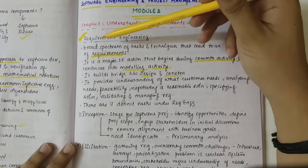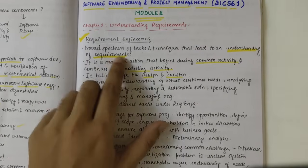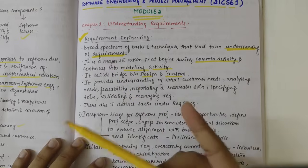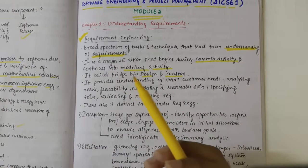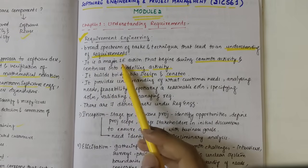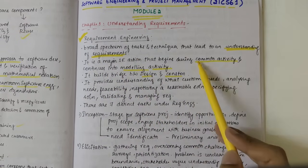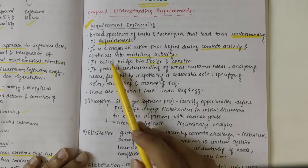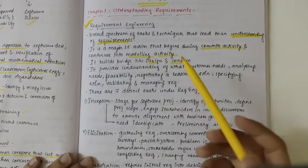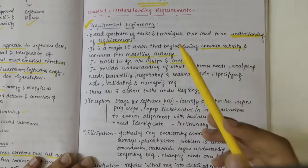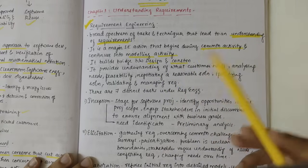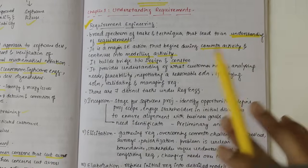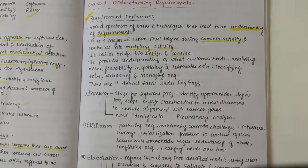Understanding the definition first: Requirement Engineering is a broad spectrum of tasks and techniques that lead to understanding of requirements. We get requirements in the communication activity. It is a major software engineering action that begins during the communication activity and continues into the modeling activity. It builds a bridge between design and construction. Only if we understand and gather the requirements can we generate the model for design, then construction, then deployment — those are the five activities for any software process.